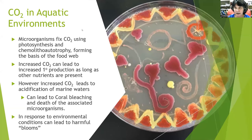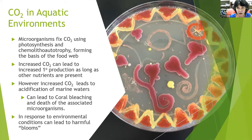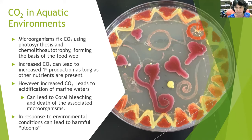If we look at carbon dioxide in aquatic environments, microorganisms fix CO2 using photosynthesis and chemo-litho-autotrophy, and they form the basis of the food web as primary producers. Increased CO2 levels can lead to increased primary production as long as other nutrients are present — you might think this is really good. However, increased CO2 levels also lead to acidification of marine waters, dropping the pH of the water. This leads to coral bleaching and death of the microorganisms associated with the coral. Just like we have beneficial bacteria, coral also has beneficial bacteria that help them survive. If we're decreasing the pH of the ocean, we don't know what's going to happen to these bacteria that produce oxygen and sequester carbon dioxide.